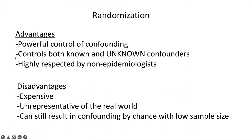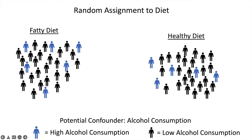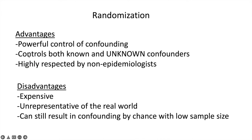Randomization controls for both known and unknown confounders. That's a main justification issue with observational research — you might say you controlled for alcohol consumption so the two groups are exchangeable, and someone could easily say, 'What if there's some other confounder you didn't know about, so you didn't think to control it?' You can never be sure. But with randomization, you can be a lot more sure. It's highly respected by non-epidemiologists — there are clinical people and research doctors who won't even give any credence to observational research.